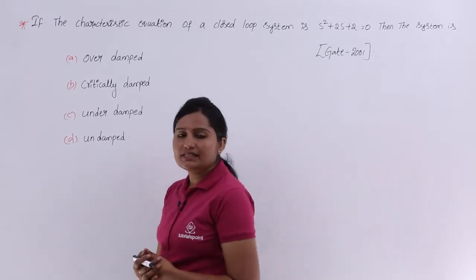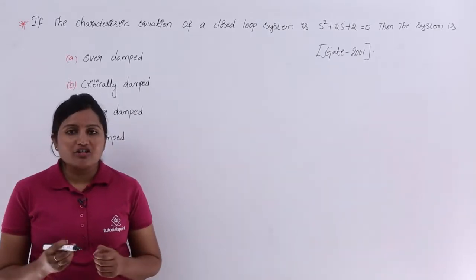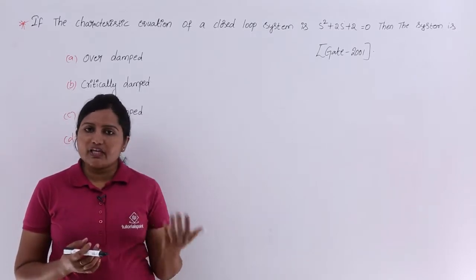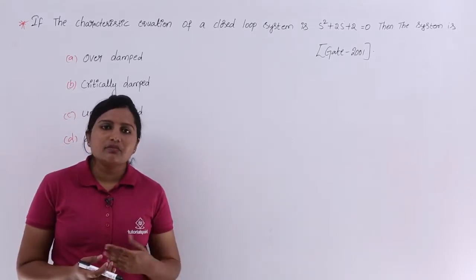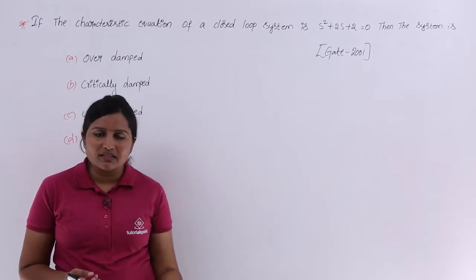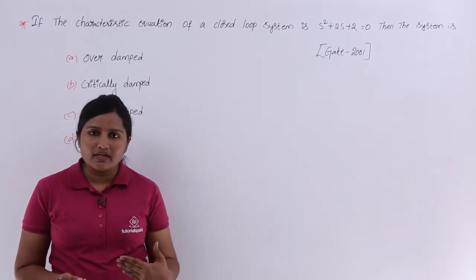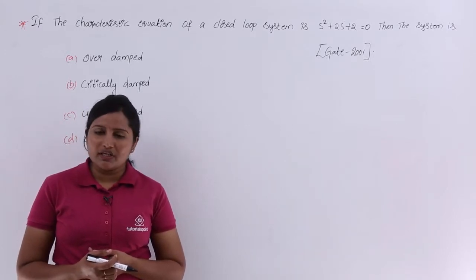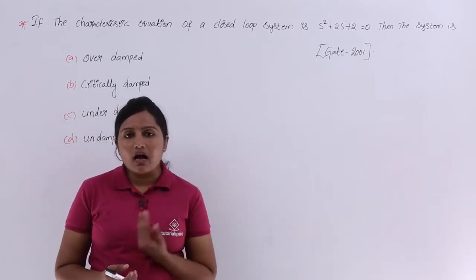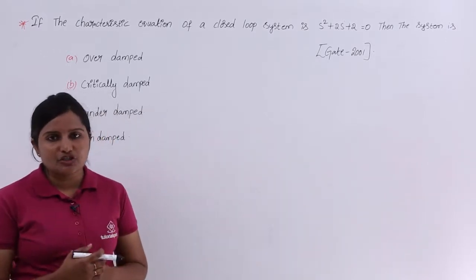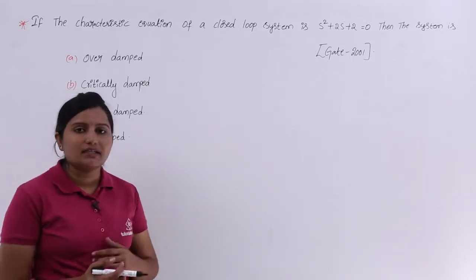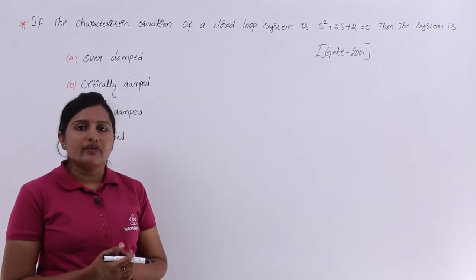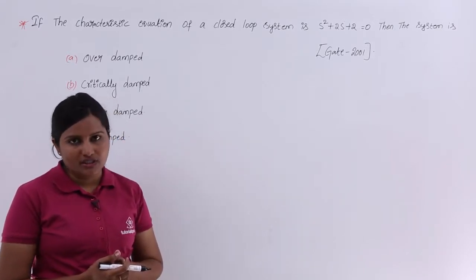How we can determine the system damping? According to the value of damping ratio zeta, we can determine whether the system is under-damped, undamped, over-damped, or critically damped. By comparing the characteristic equation with the given characteristic equation, we can determine the damping ratio zeta.